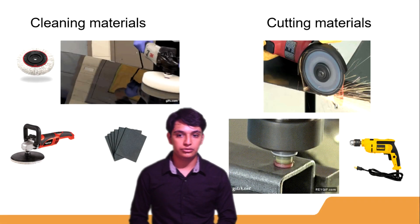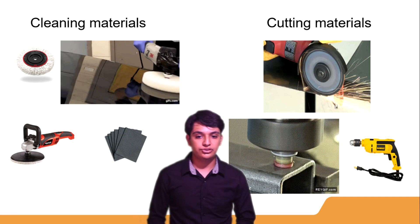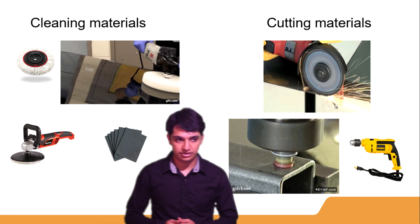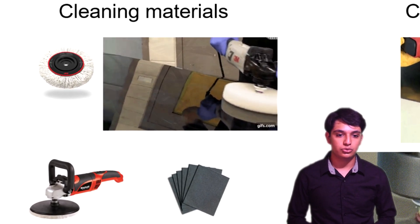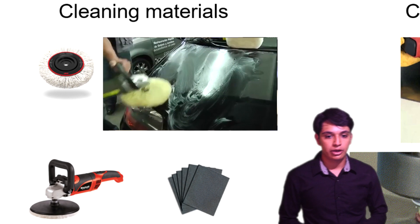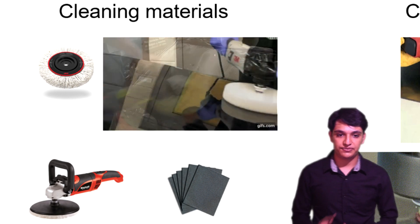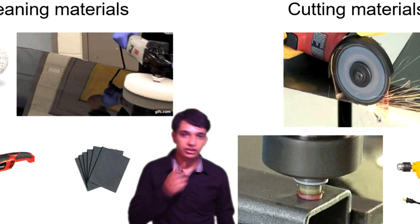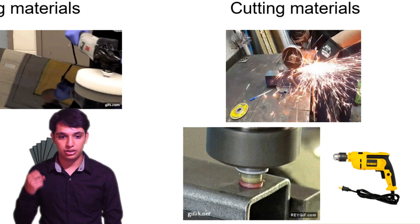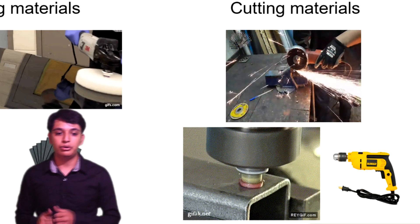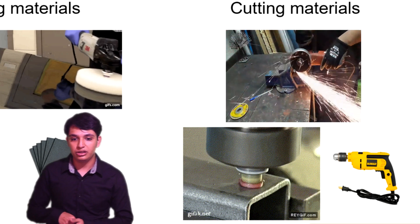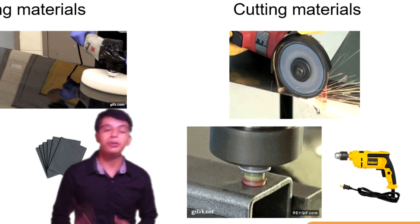For cleaning and cutting materials, we use two types. The cleaning materials are water, brush, polish, machine, and sandpaper — we will use these to clean the surface. The cutting materials are a straight cutting machine and a grinding stone, which we will use for cutting operations.